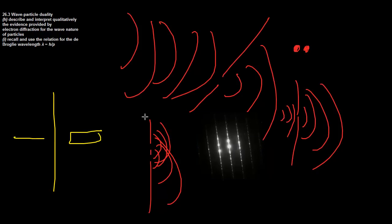Remember, so do X-rays and radio waves — not only do they have 'wave' in their name, but X-rays and radio waves are all light of different frequencies, so they are all electromagnetic radiation.